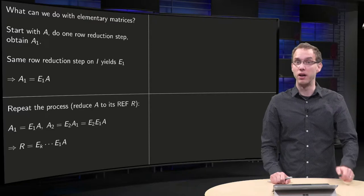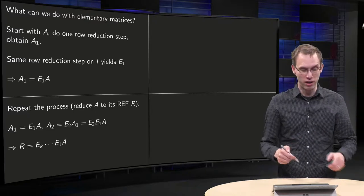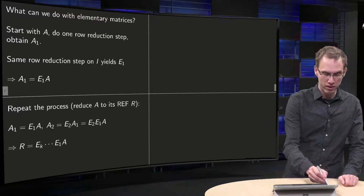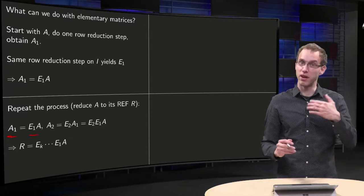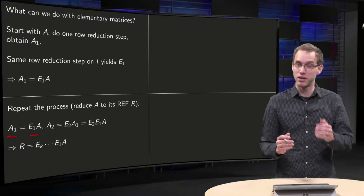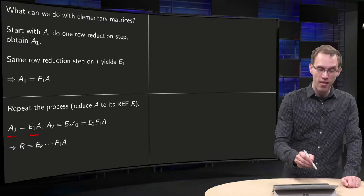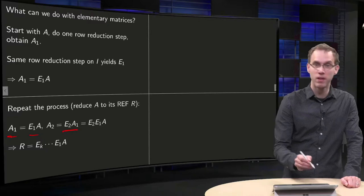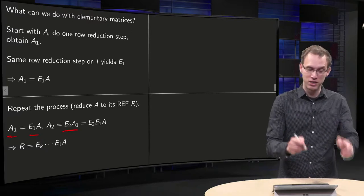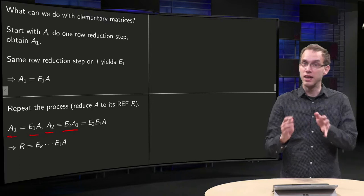Now we can repeat this process. So we have our A1 equals E1 times A, and we do the second row reduction step. We find our elementary matrix E2, our second elementary matrix. We have to do this row operation on A1, so our A2, second step, equals E2 times A1.